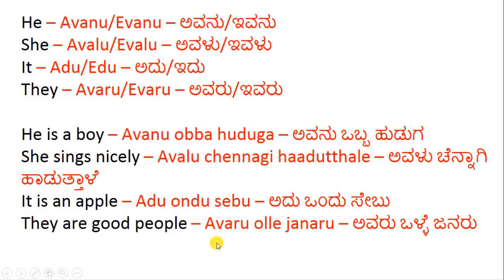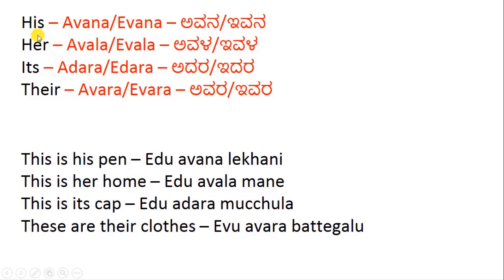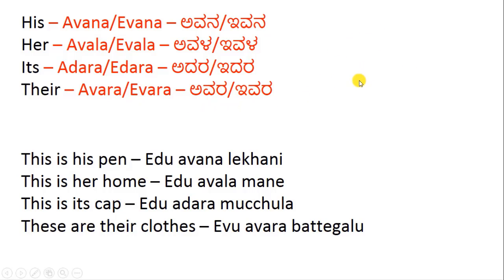His is Avana or Ivana in Kannada. Her is Avala or Ivala in Kannada. Its is Adhara or Idhara in Kannada. Their is Avara or Ivara in Kannada. These are used for possession.